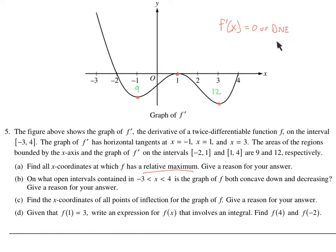So aren't these my critical numbers? 'Does not exist' counts, but should the derivative ever not exist? No — isn't it twice differentiable? So we don't have to worry about that. Because it's twice differentiable, we can technically ignore the DNE case, since the derivative always exists. We're looking for where the derivative is 0. This is the derivative graph, so where is the derivative 0? That's going to be right here, right there, and right there. Those three places are critical numbers: x equals negative 2, 1, and 4 — possible relative maxes.